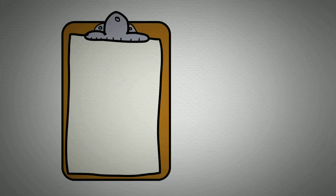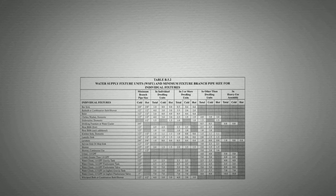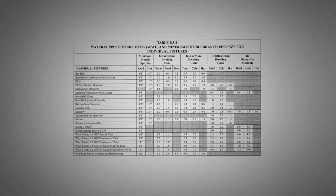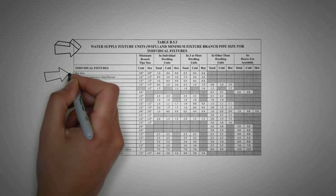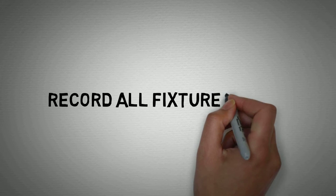First, we're going to list all of the individual fixtures being used in the dwelling unit, building, or assembly. Next, refer to the NSPC's Water Supply Fixture Unit and Minimum Fixture Branch pipe size for individual fixtures table. Use the table and record all of the fixture's unit values.